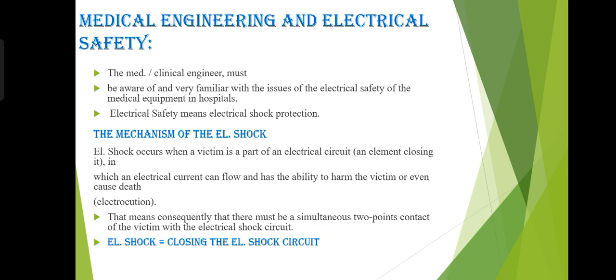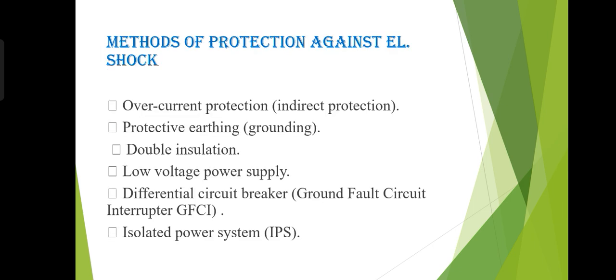Electrical shock occurs when a victim is part of the electrical circuit, such that an electrical current can flow and has the ability to harm the victim. Consequently, there must be a simultaneous two-point contact of the victim within the electrical shock circuit. Electrical shock is equivalent to closing the electrical shock circuit.